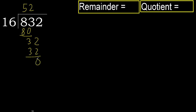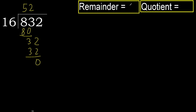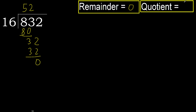Subtract, next. There is no number, therefore finish. 832 divided by 16 is 52.